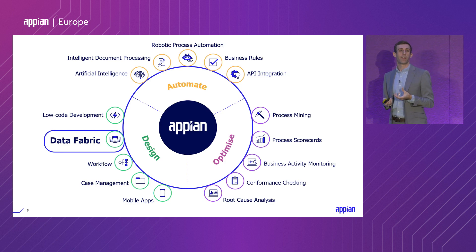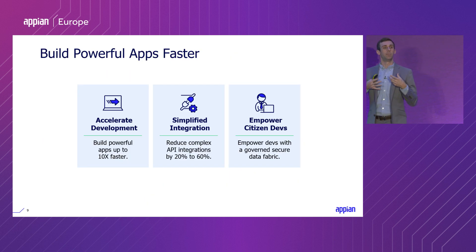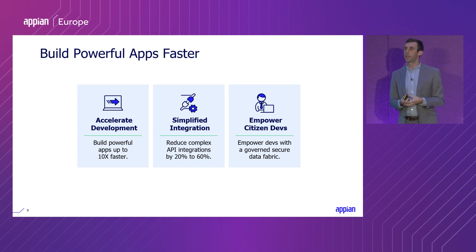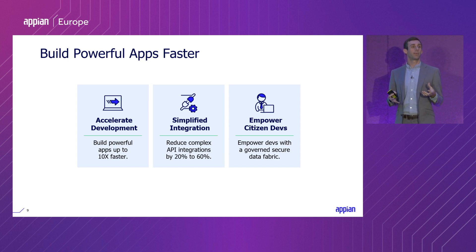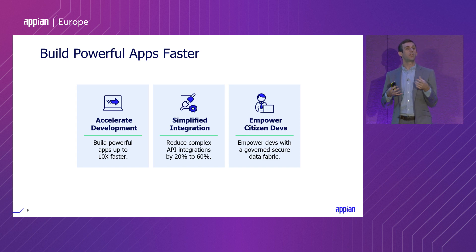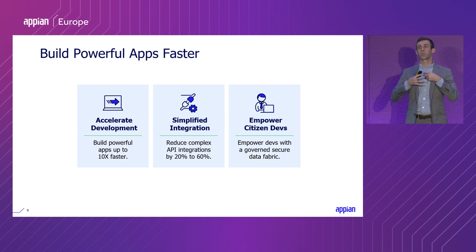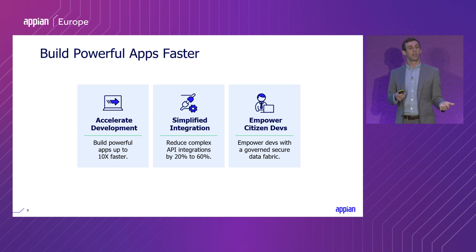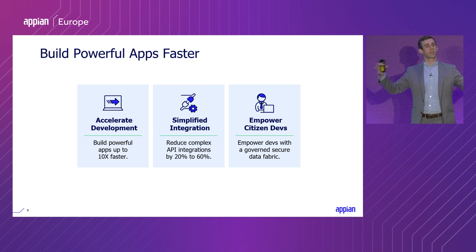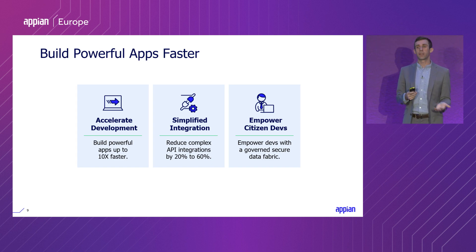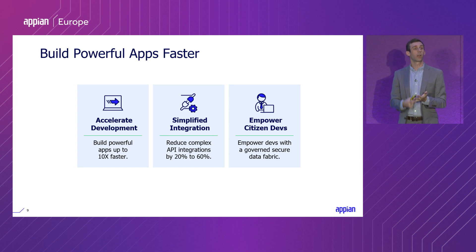When you establish your data fabric, there are a few key benefits. The first is accelerating your application design. In a few minutes, I'll give you an idea of how we can set up records in Appian — which are the key component of our data fabric — and then use the definition of those records in order to create supporting objects. Especially for novice developers, using records is a great way to get started, establish the data model of your entire application, and then add in supporting things that allow you to take action or report on that data.